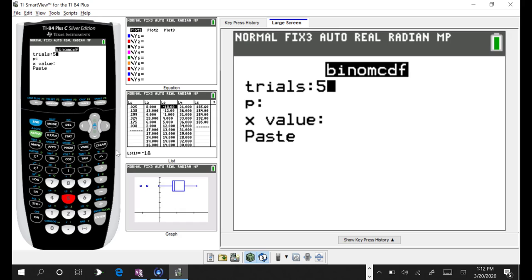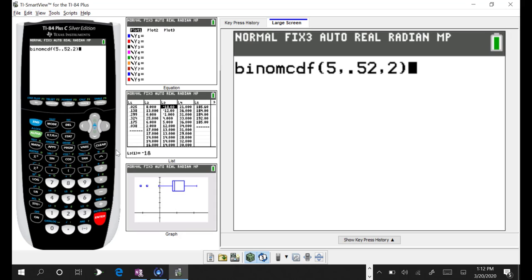The number of trials is 5, the probability of the success is the .52, always has to be a fraction. And then the stopping point, so this x value is the point at which we want to stop doing the sum, so we're going to stop summing at 2. So it will give me the probability of x equals 0, x equals 1, and x equals 2. And if I put that in there, hit enter...